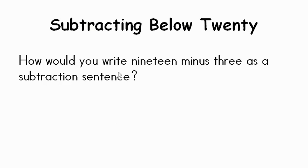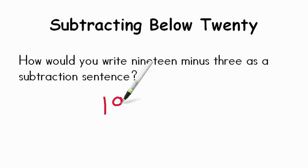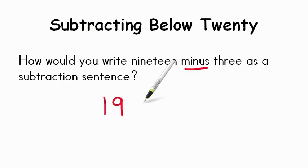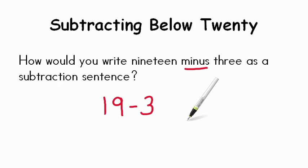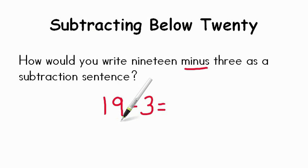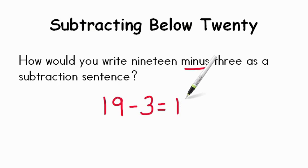Now let's try our word problem. How would you write 19 minus 3 as a subtraction sentence? You'd write your 19 first. Am I going to have a plus symbol or a minus symbol? That's right — it says minus right here. We're subtracting, we're taking away. So the subtraction sentence is 19 minus 3. Would we use counting on or counting back? Counting back would be the better solution. If you count back 3, what number do you get? That's right — you get 16.